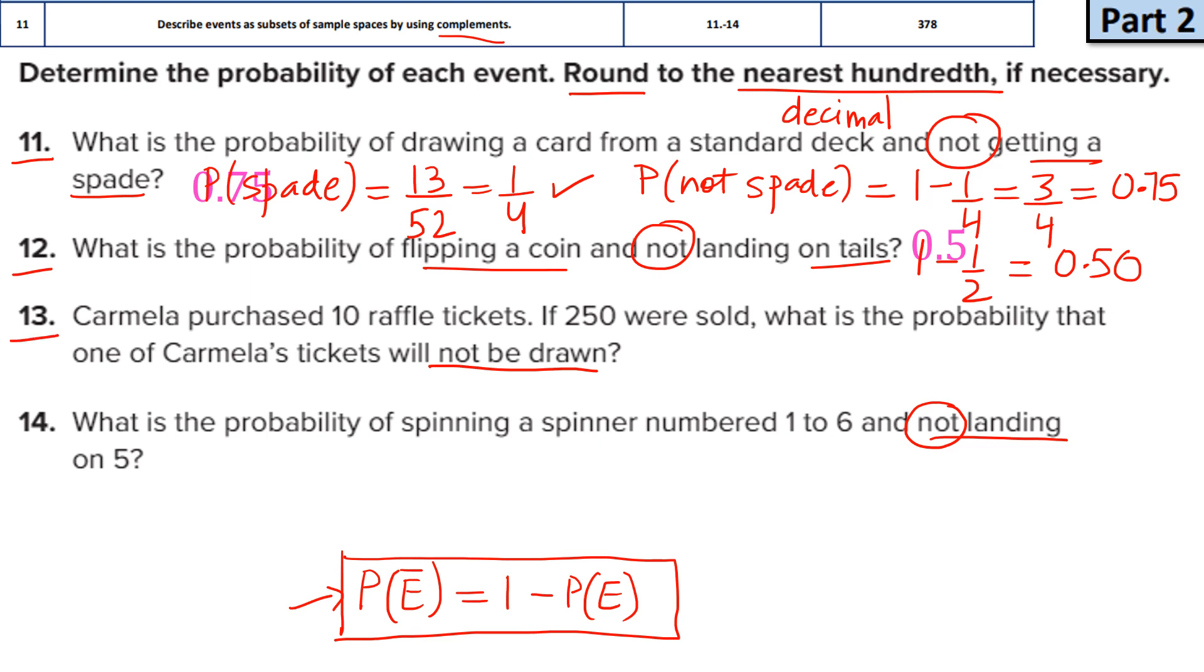Next is Carmela purchased 10 raffle tickets. If 250 total tickets were sold, what is the probability that one of Carmela's tickets will not be drawn? So she's going to win this raffle if any of her 10 tickets is chosen. So what's her probability of choosing Carmela's ticket? The probability of choosing her ticket, I'm just denoting with C because of Carmela, is that any of the 10 tickets is selected. So this is 10 divided by total tickets, 250. If you simplify, it's 1 divided by 25. And if you don't want to have her card, then you calculate the complement. So you subtract from 1 minus 1 by 25. And this comes out to be 24 over 25. Convert into decimal. And this is going to be 0.96.